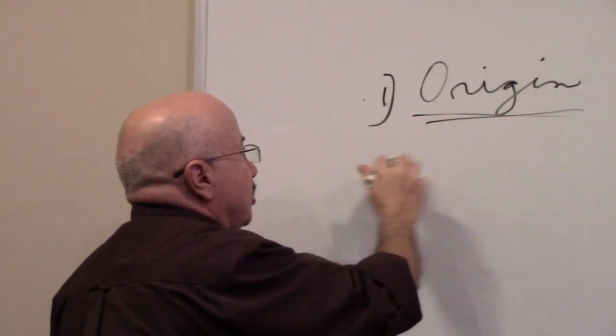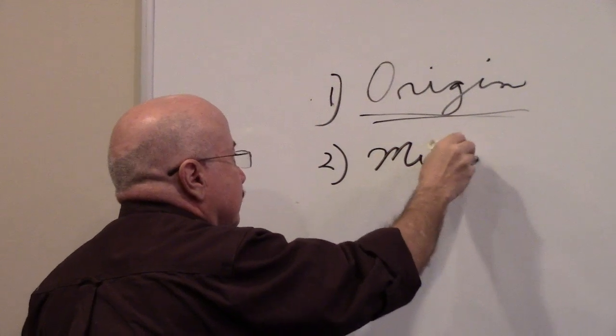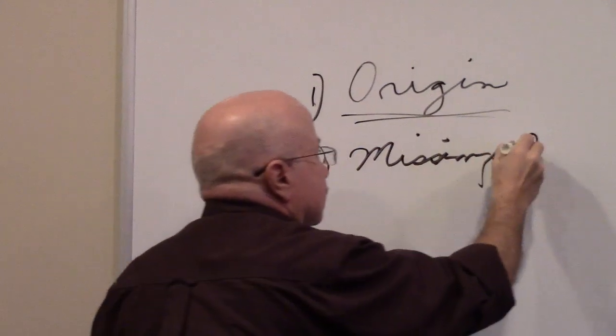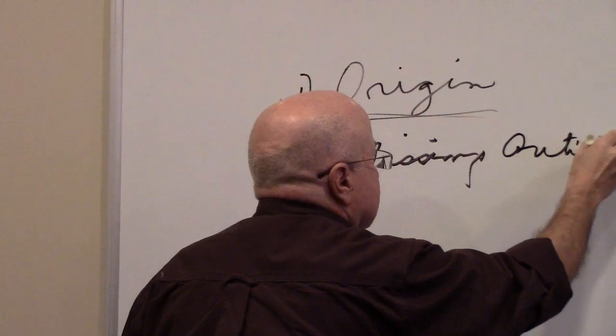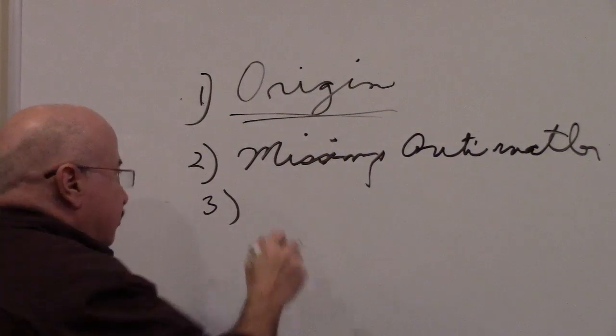Number one, the origin. Number two, the missing antimatter. And number three, the inflation.